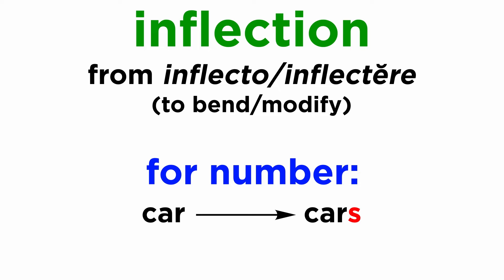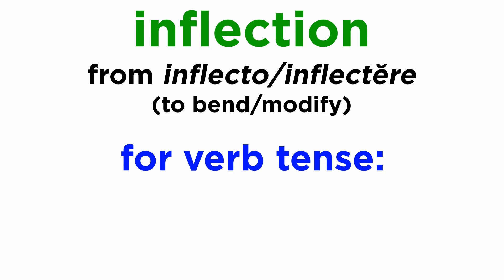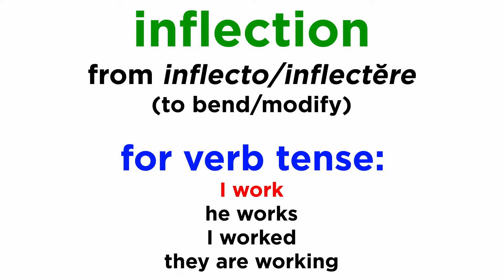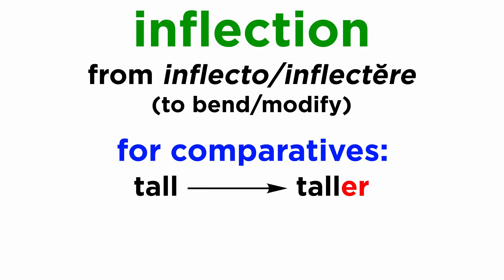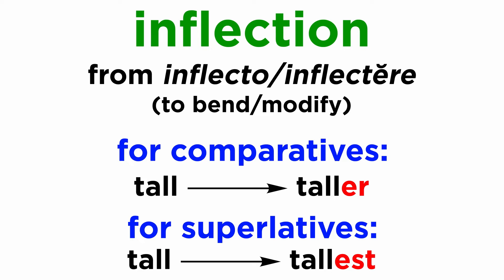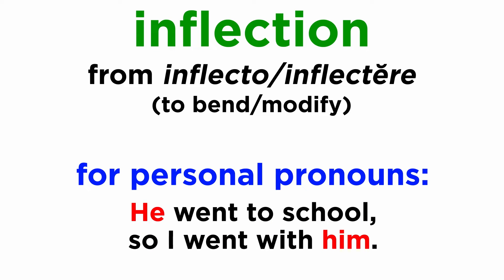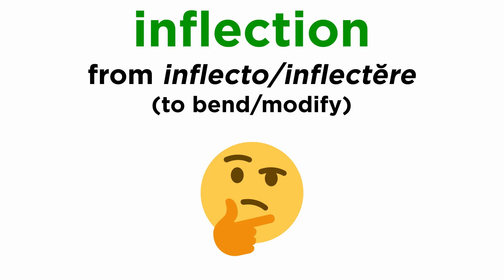English words are inflected for number — so in English, 'car' becomes 'cars' when going from singular to plural. Verbs are also inflected in certain tenses, like how 'I work' becomes 'he works,' 'I worked,' or 'they are working.' This applies to comparatives like 'tall' and 'taller,' superlatives like 'tallest,' and in some personal pronouns — 'he went to school, so I went with him.' But that is more or less the extent of inflection in the English language.